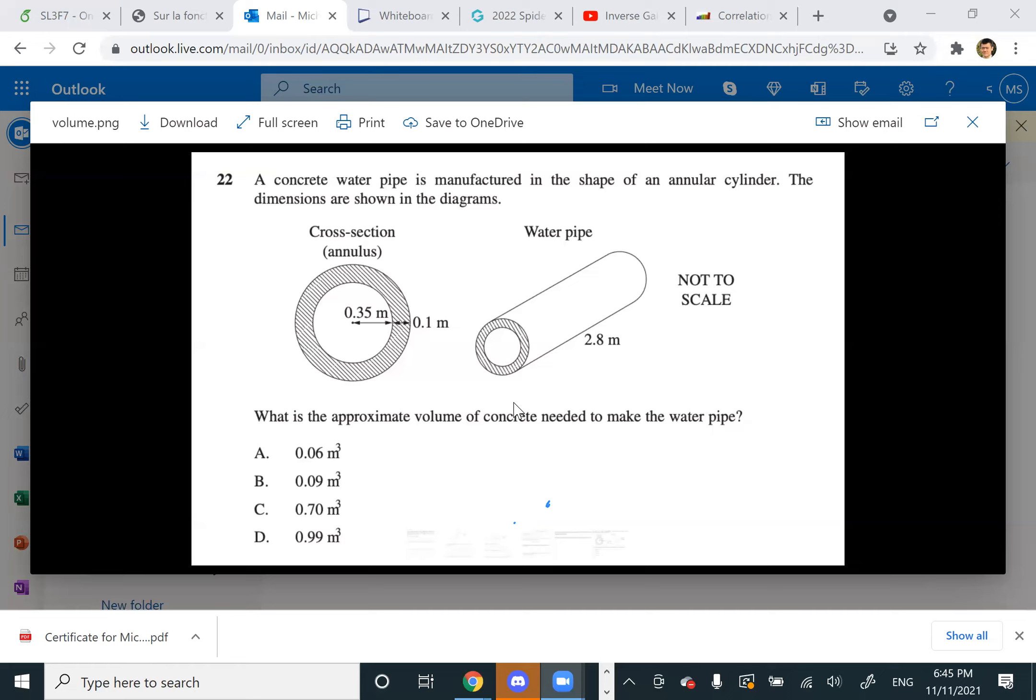So that means it'd be πr² in like 0.45, so π times 0.45 squared. Oh yeah, so 0.45 is the big circle. Yeah, and then you subtract π times 0.35 squared. And you times that by 2.8.